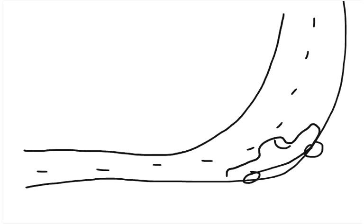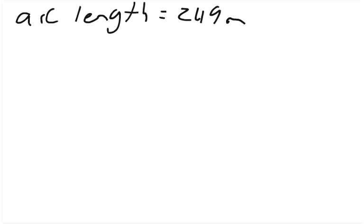So the first part is, let's go ahead and write down what we know. We know that the arc length, the distance, let's write it as arc length. Arc length equals 249 meters. So on that road, that's like from this point to this point, this length right here is 249 meters. And the time it took, time equals 33.0 seconds.